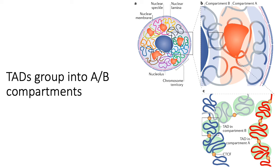In contrast, the B compartment contains TADs that tend to be transcriptionally repressed. Those B compartment TADs correspond to inactive regions, gene deserts or heterochromatin, with a lot of interactions between inactive regions of the genome.